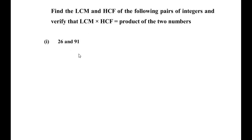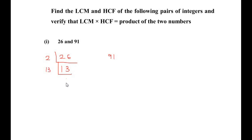To find the LCM and HCF I am going to use prime factorization using the repeated division method. Let me write down 26 here and 91 over here. I will use only prime numbers to divide 26 repeatedly. 26 is divisible by 2, giving 13, and 13 is a prime number so it divides itself. So the factors of 26 are 2 times 13.